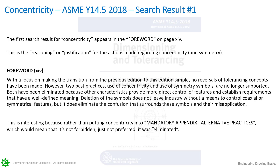So we're supposed to switch over. Now, this is the 2018 standard — don't confuse this with the 2009 standard. Rather than putting concentricity into the mandatory Appendix 1 alternative practices — which is what they did with direct tolerancing, meaning using coordinate dimensioning for locating surfaces — they didn't outright ban that, they just moved it into mandatory Appendix 1 alternative practices, meaning it is no longer preferred. But they didn't do that with concentricity and symmetry. They just eliminated them altogether.